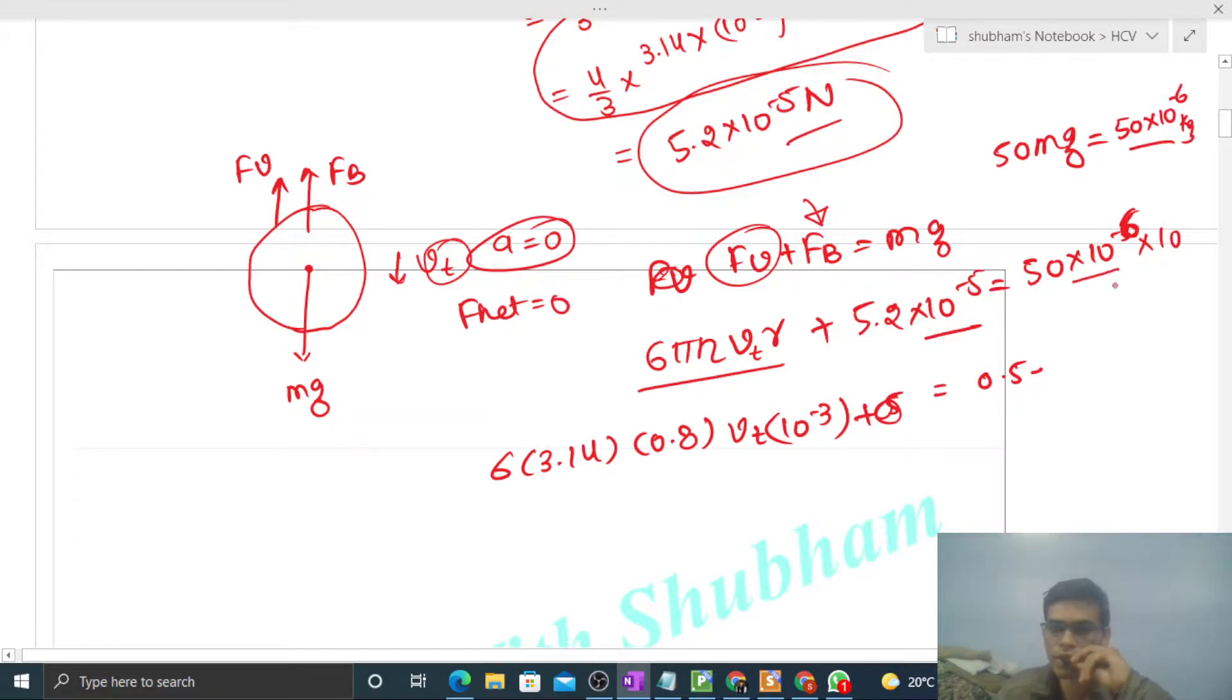This gives 0.5 × 10^-3 minus 5.2 × 10^-5, divided by these values: 10^-3, 0.8, 3.14, and 6. This is the value of terminal speed.